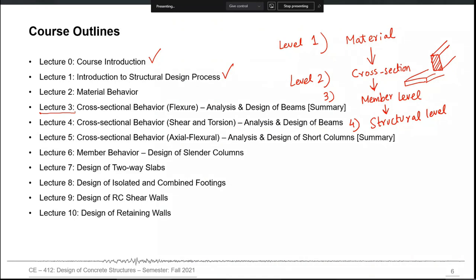For example, when we talk about the design of short columns, we primarily design the cross-section. But in the case of long columns, the length of the column also plays a role in the design. So we will be considering the whole member level when designing a long or slender column — length becomes a parameter in the design calculations. This will not be the case for short columns.